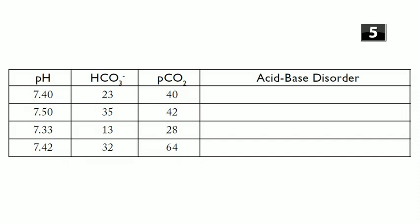For practice problem number five: the first ABG — pH 7.4, bicarb 23, PCO2 40 — all normal, no disorder. The next — pH 7.5 (high, so alkalosis), bicarb 35 (high, metabolic cause), PCO2 42 (normal range) — this is a pure metabolic alkalosis without any compensation.